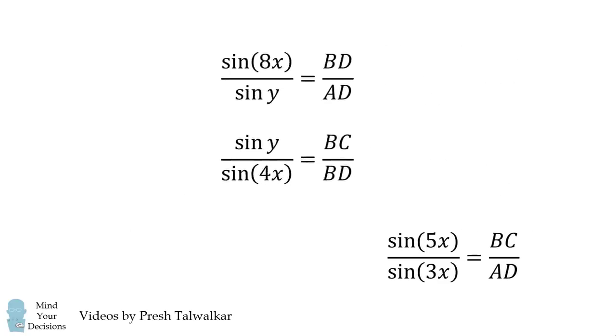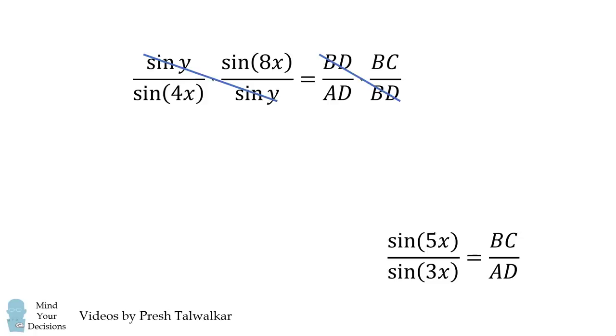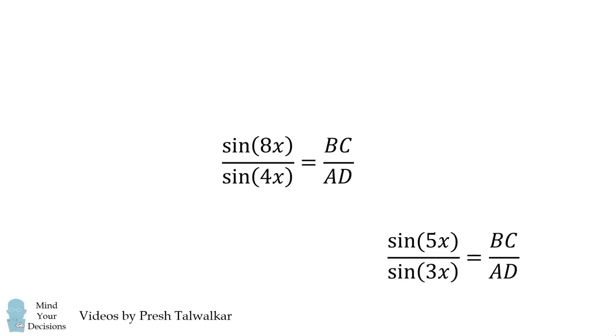From here, we'll take a look at these first two equations. We'll multiply the first equation by the second equation. We can cancel out the sine Y terms, and we can cancel out the BD terms. This simplifies to be sine of 8X over sine of 4X is equal to BC over AD. But notice, this is exactly what the third equation is equal to.